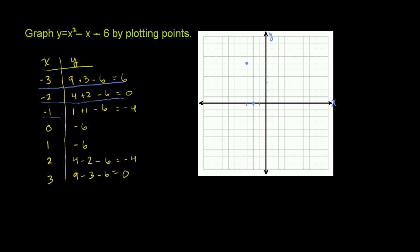Then we have negative 1 comma negative 4. Negative 1, 1, 2, 3, 4. Negative 4 is right over there. Then we have 0, negative 6. 0, x is 0, y is negative 6. So it's that point right there. Then we have 1, negative 6. So x is 1, y is negative 6.